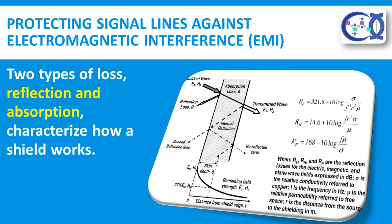Two types of loss — reflection and absorption — characterize how a shield works. Reflection loss is related to the ratio between the electromagnetic wave impedance and the shield impedance. Absorption loss is directly proportional to shield thickness and inversely proportional to shield material skin depth. It is highest at high frequencies and falls rapidly at low frequencies. Fortunately, there are other ways to reduce magnetically coupled interference besides shielding. Loop area can be reduced by routing the conductors which form the loop closer together, or by reducing the length of the conductors.